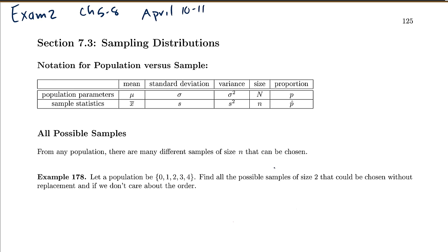First we talk about all possible samples, because from any population there would be many different samples of size n that you could choose. Let's let a population be the set {0, 1, 2, 3, 4}. This is a very small population, just so that it's actually manageable for us to work with.